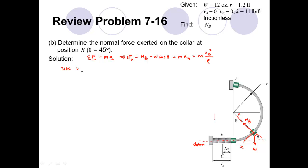We'll use work-energy to find the velocity at point B. The same reasons work-energy was convenient in part A apply here: the normal force does no work, and we only need to consider what's happening at point A and point B since energy is conserved. Energy at A equals energy at B, considering kinetic and gravitational potential energy. The kinetic energy at A is zero since the collar starts at rest. The gravitational PE at A is mg times 2R. The kinetic energy at B is one-half mv squared. The gravitational PE at B is mg times h_B. There is no elastic potential energy since the spring is relaxed throughout this portion.